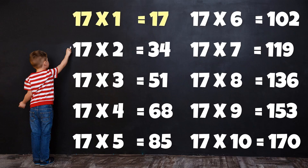Table of 17: 17 times 1 is 17, 17 times 2 is 34, 17 times 3 is 51, 17 times 4 is 68, 17 times 5 is 85, 17 times 6 is 102, 17 times 7 is 119, 17 times 8 is 136, 17 times 9 is 153, 17 times 10 is 170.